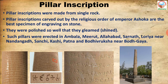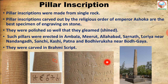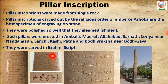The pillar inscriptions were carved in Brahmi script. You can see the script written on those pillars. It is a script, not merely a language — it is known as Brahmi script, used during Ashoka's Mauryan time. Whatever was written and engraved on those pillar inscriptions was done in Brahmi script. Remember that.